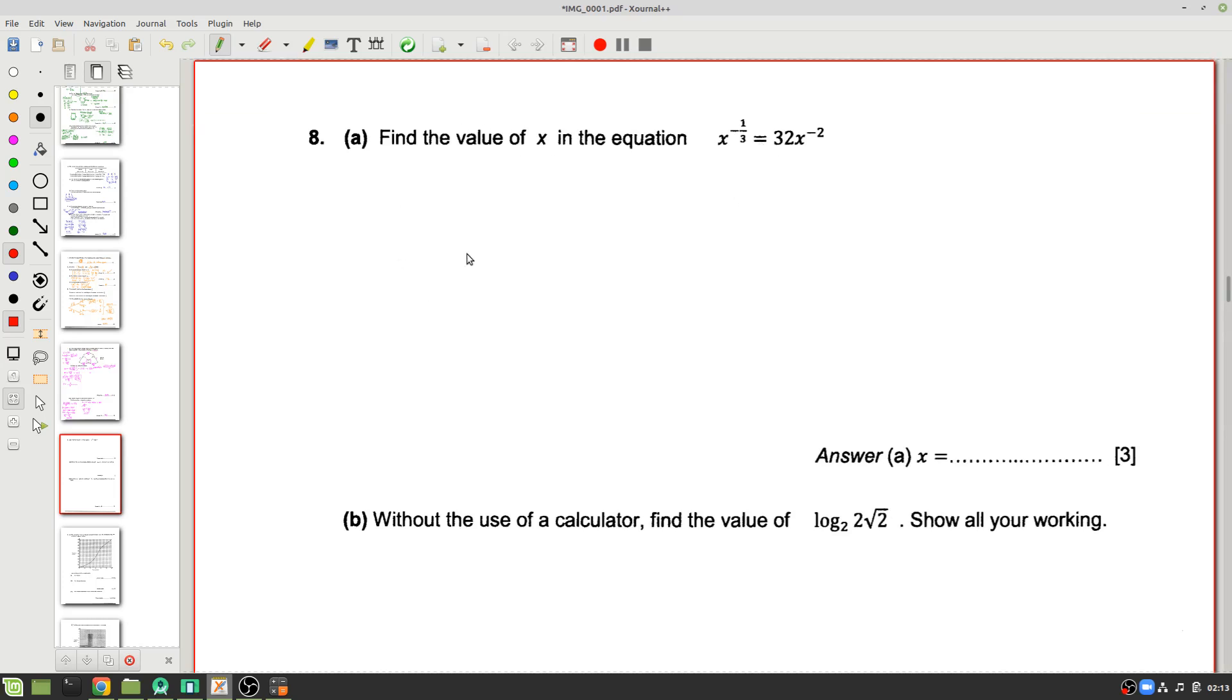Okay, find the value of x in this equation. The equation is x raised to the power of negative 1 third is equal to 32 times x to the negative 2. So this looks a little bit complicated but what we can do is we can make sure we first get the unknown on one side only. I would suggest let's keep the 32 where it is and divide both sides by x to the power of negative 2. If you have another method that you found, please let me know in the comments below. That's the nice thing about mathematics. There's always many ways to get to an answer.